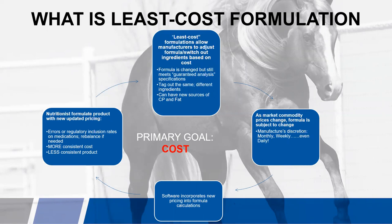Look at this as a circle starting from up here on your commodity cost. As you follow this circle — this wheel — again, this can happen monthly, weekly, even daily. This circle takes place within the manufacturer.